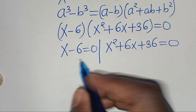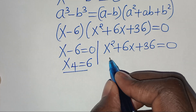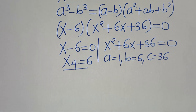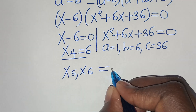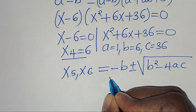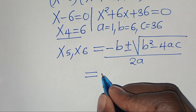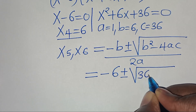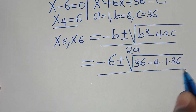From the first part, x4 equals 6. The second part is a quadratic with a = 1, b = 6, and c = 36. Solving for x5 and x6 using the quadratic formula: minus b plus or minus the square root of b² minus 4ac, divided by 2a. Substituting: minus 6 plus or minus the square root of 6² minus 4(1)(36), divided by 2(1), which is 2.